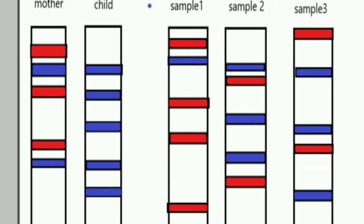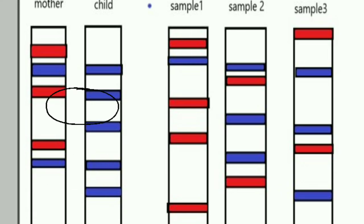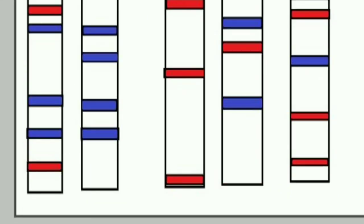The blue-colored VNTRs are highlighted to show which of the child's VNTRs match with the three samples and with the mother. Comparing the mother's and child's fingerprints, they are similar at four VNTR regions — these four regions match between the mother's and child's DNA fingerprint.